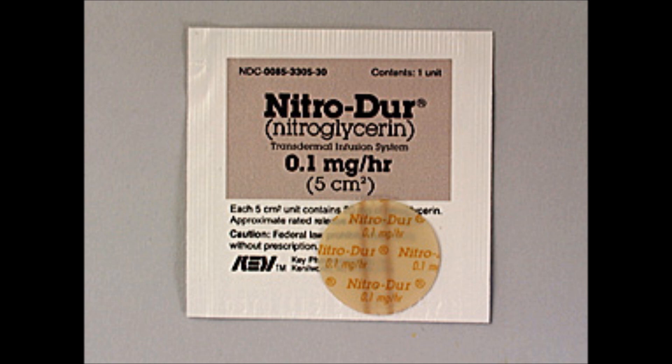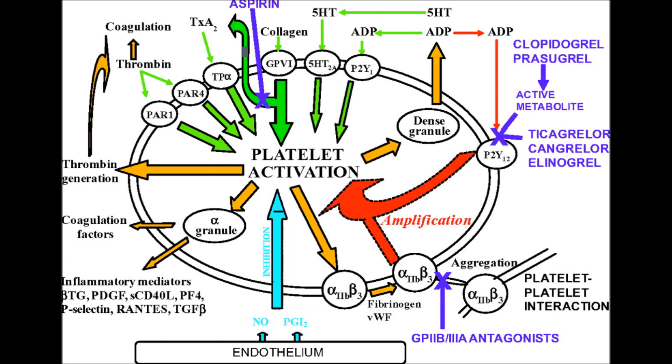Nitrate examples include nitroglycerin IV, sublingual spray, PO (Minitran, Nitrodisc) transdermal, isosorbide (ISMO, Isordil, Imdur, Sorbitrate). Caution: blood pressure less than 90 systolic before giving. Side effects are hypotension and headache. Platelet inhibitors keep platelets from aggregating and clumping; they are used for unstable angina, post-PTCA, and stent placement. Examples include tirofiban (Aggrastat) and eptifibatide (Integrilin).